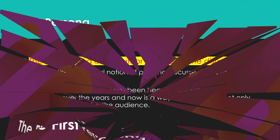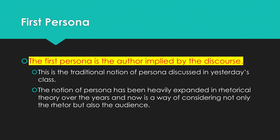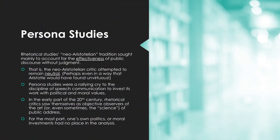The first persona is super straightforward — that's the one we talked about yesterday with the idea of a rhetor. When someone goes up on stage to perform a persuasive piece, that's their persona. We're going to call that the first persona: the author implied by the discourse. That's the traditional idea, and you already have that in your notes.